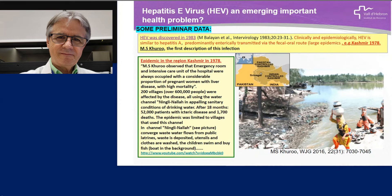About some preliminary data about this disease: hepatitis E virus was discovered in 1983 by Mikhail Balayan. Clinically and epidemiologically, hepatitis E virus is very similar to hepatitis A, predominantly transmitted via fecal-oral route, and related to large epidemics. In fact, one of these large epidemics in Kashmir, India in 1978 — along with the first description of this infection by Dr. Khuroo — where he observed that the emergency room and intensive care unit of the hospital were always occupied with a considerable proportion of pregnant women with liver disease with very high mortality.